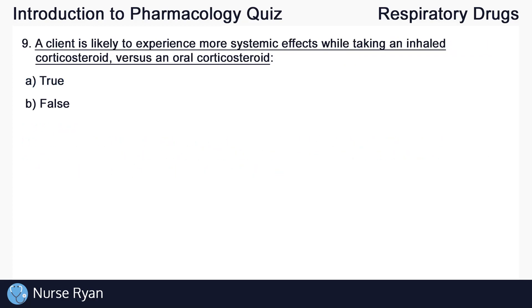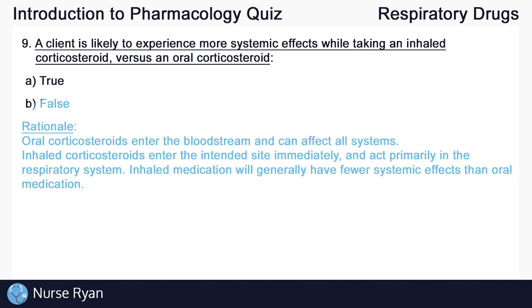Question number nine. A client is likely to experience more systemic effects while taking an inhaled corticosteroid versus an oral corticosteroid. This is B, false. Oral corticosteroids enter the bloodstream and can affect all systems more easily. Inhaled corticosteroids enter the intended site immediately and act primarily in the respiratory system. Inhaled medication will generally have fewer systemic effects than oral medication.